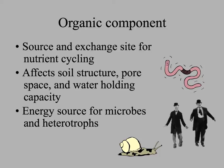What about the organic component? It basically comes from formerly living stuff that's died. The organic matter is an exchange site for nutrient cycling as well as a source. Organic components decomposing change and affect the soil structure — the amount of space between the particles and how much water it can hold. The more organic matter, the more the soil holds on to water. And most importantly, the organic part of soil is an energy source for decomposers, microbes, and other small organisms that break things down.